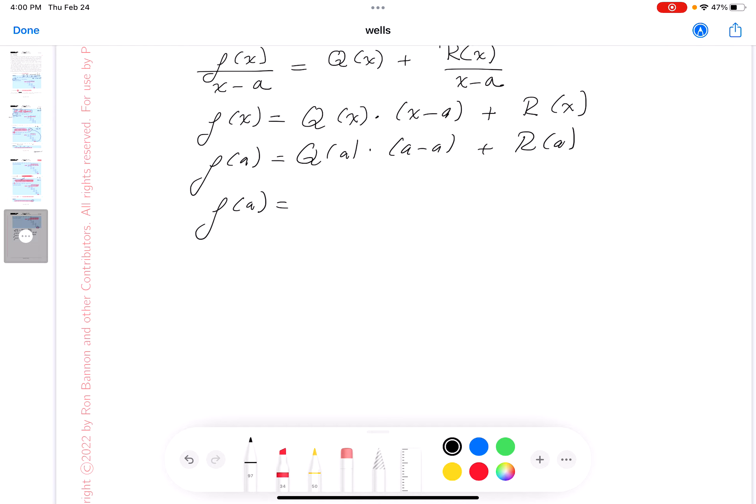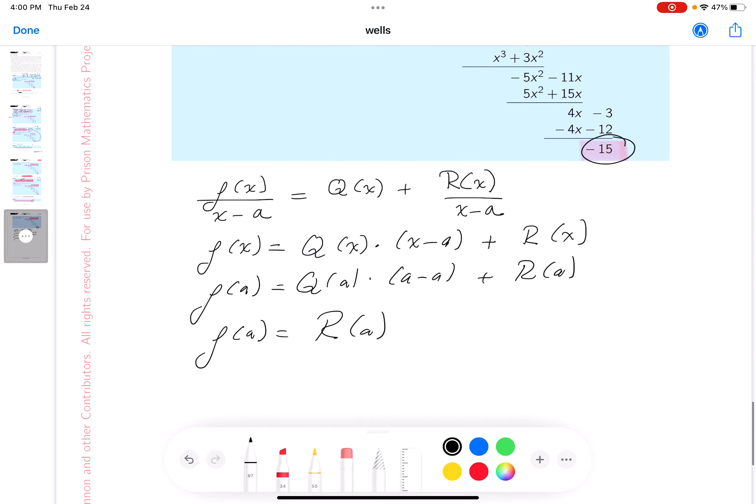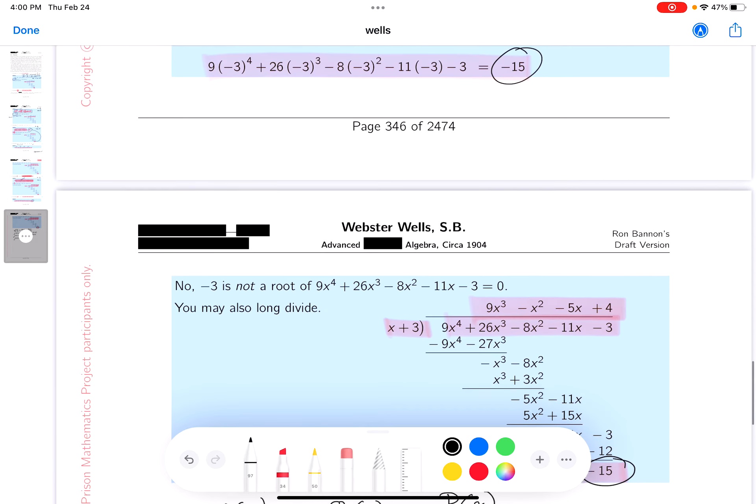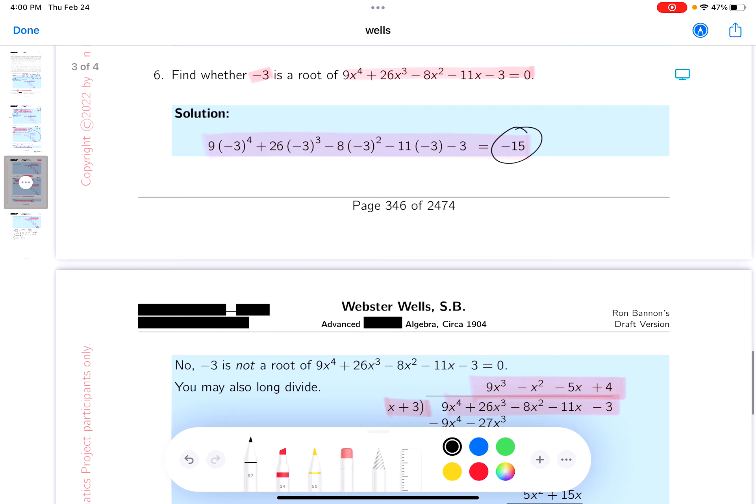That's all we're saying. What remainders do we want? We want zero remainders. So going back to this example, I want to tell you what f(x) is. f(x) is 9x^4 + 26x^3 - 8x^2 - 11x - 3. It's even hard to write down.